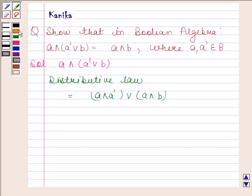Now we know that A and A complement is equal to 0. So this is equal to 0 or A and B.